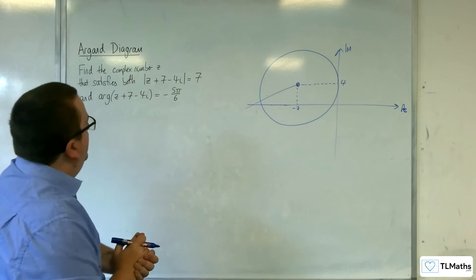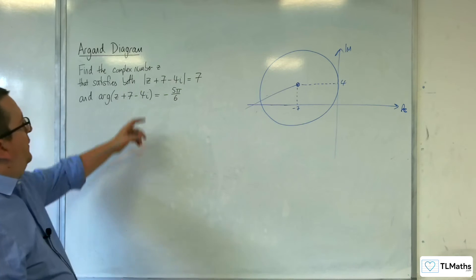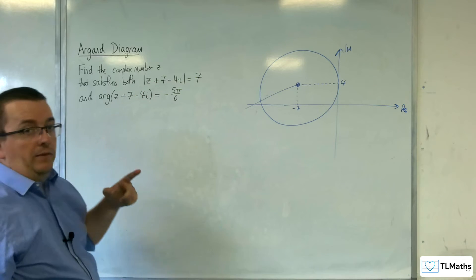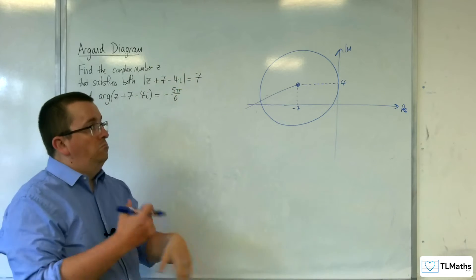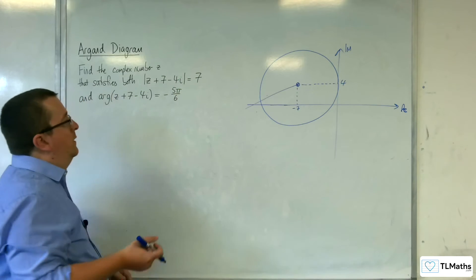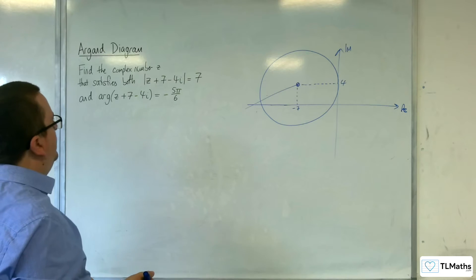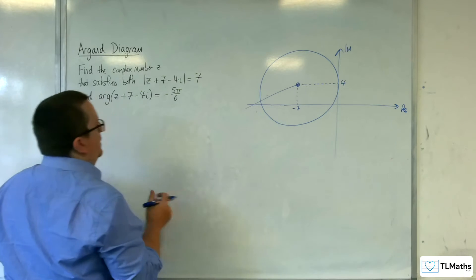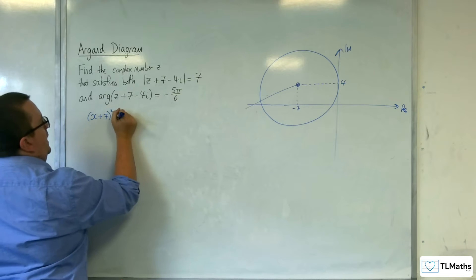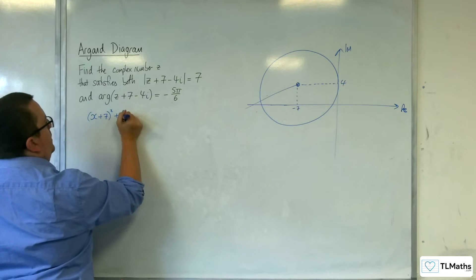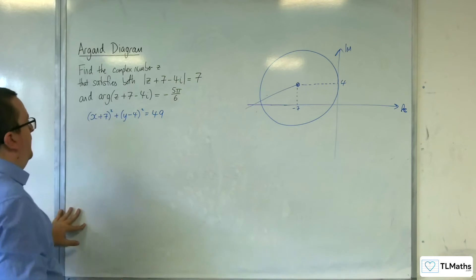What I'm going to do is find the Cartesian equation for both of these, substitute the line into the circle, and then work out the required point. So the circle has the equation (x + 7)² + (y − 4)² = 49.